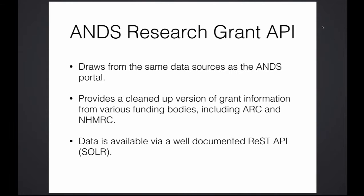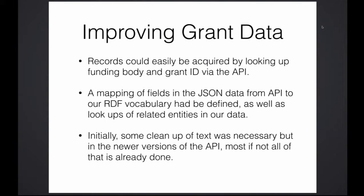For the first business case, we didn't actually have to do very much. We could basically look up grants based on their grant ID and the funding body — grant IDs aren't necessarily unique across funding bodies, but doing this lookup was quite easy. We would get back the record as a JSON-formatted record, and all we really had to do was map those fields to our RDF vocabulary and do a few related lookups for people in our database to link it up properly. We did this work about a year and a half ago, and initially a lot of the text fields still contained funding amount information in unstructured form, so we did a fair bit of text processing to extract it. Nowadays ANS has done a lot of work improving this, so we're now getting a much cleaner version of the data — whoever wants to use this information now is in a really good position.